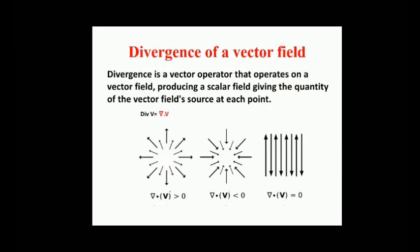In vector calculus, divergence is a vector operator that operates on a vector field, producing a scalar field giving the quantity of the vector field source at each point. See the figure. In the first figure, the divergence of the vector field is positive since the flow is expanding.